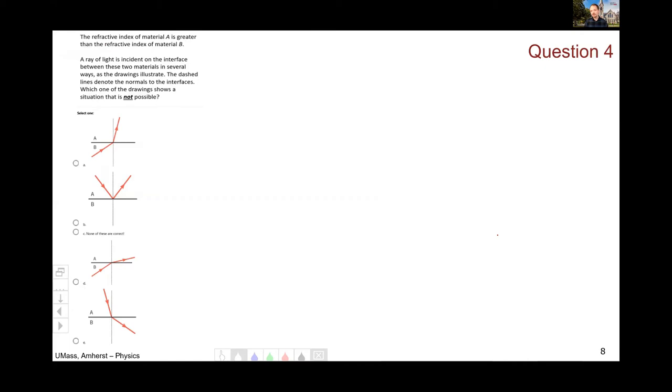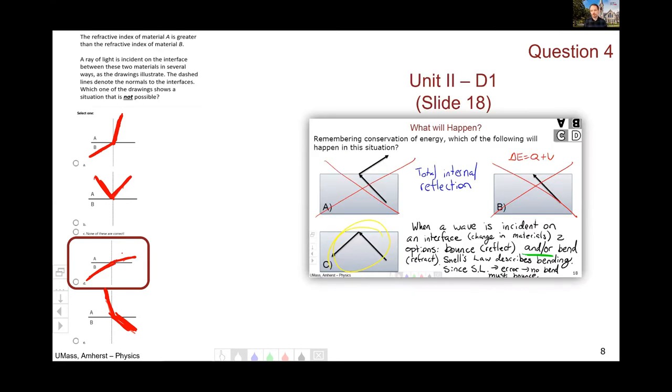Question four was thinking about how light bends as it goes from one material to another. In this case, the top material A was the compound of higher index of refraction, the slower light speed. And we know from Snell's law that when light goes from one material into another with a higher index, it will bend toward the normal. So that's the top image there. And E is really just the same situation run in reverse, so that one's also possible. This bouncing is possible because that's the total internal reflection scenario. The only one that's not is the case where the light bends away from the normal. This was really our focus of the first day of unit two, for example, slide 18, where we thought about total internal reflection.